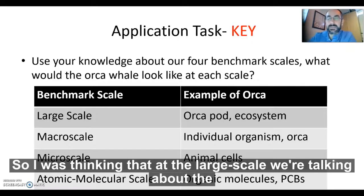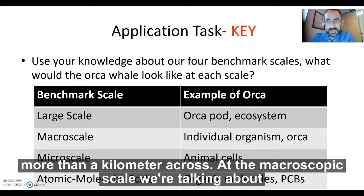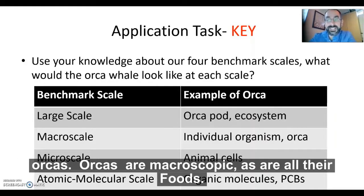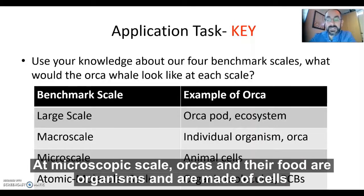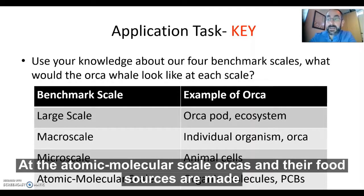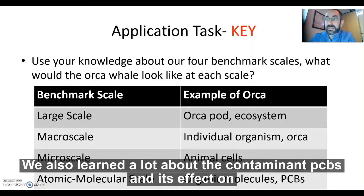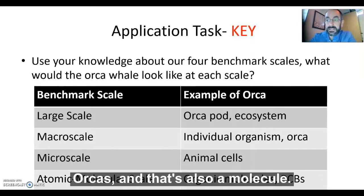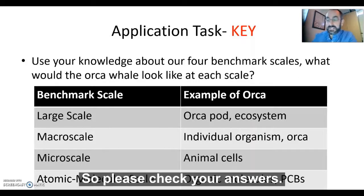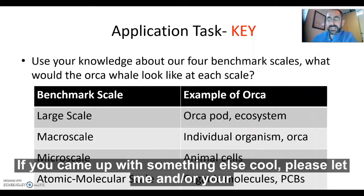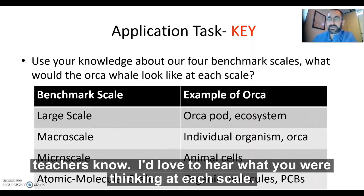At the large scale, we're talking about the ecosystem — like the Salish Sea and Puget Sound — those are definitely more than a kilometer across. At the macroscopic scale, we're talking about orcas themselves, as are all their foods. At the microscopic scale, orcas and their food are organisms made of cells. At the atomic molecular scale, orcas and their food sources are made out of proteins, carbohydrates, and fats. We also learned a lot about the contaminant PCBs and its effect on orcas — that's also a molecule.